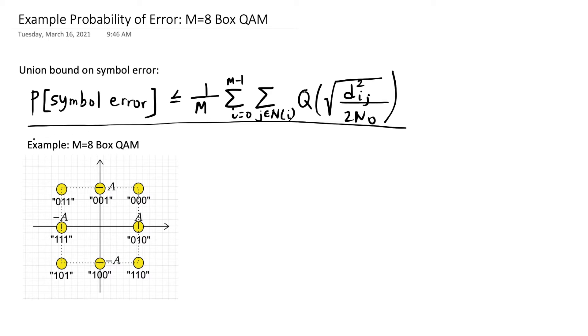In this video segment, I'm going to do an example of something I'm calling 8-box QAM because it's like square QAM, but it has a hole in the middle. It's an empty box, if you will. The first step is always going to be to draw the symbol boundaries and list the neighbors.